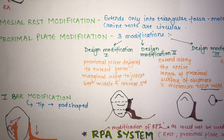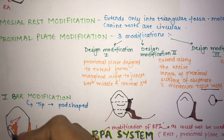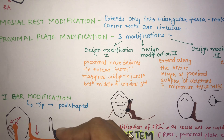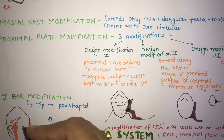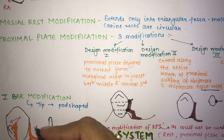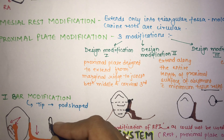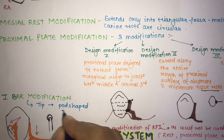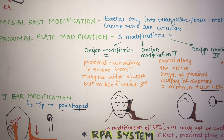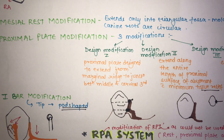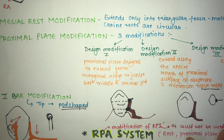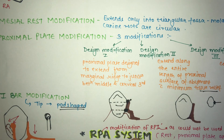The last modification is in the direct retainer, the I-bar modification. In the normal I-bar scenario, the retainer has an I-shape bar. In the RPI system, the shape of the I-bar tip becomes a pod shape, to increase tooth contact. These are the three modifications for the I-bar system.